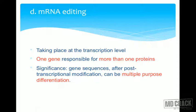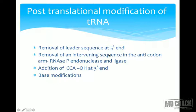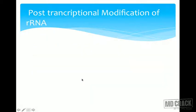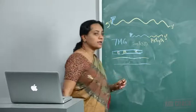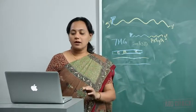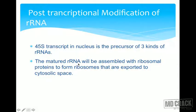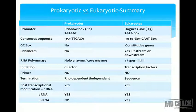Post-transcriptional modifications of tRNA include: removal of the leader sequence at the five prime end, removal of the intervening sequence in the anticodon arm by RNase endonuclease and ligase, addition of CCA at the three prime end, and certain base modifications. For rRNA, it is always synthesized as a large 45S rRNA precursor, which gives rise to all three rRNAs. The mature rRNAs are assembled with ribosomal proteins to form ribosomes and exported to the cytoplasm.